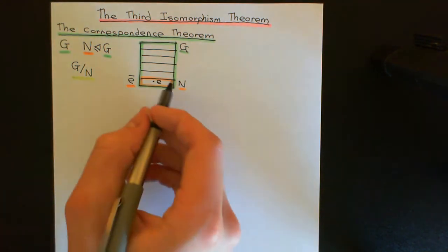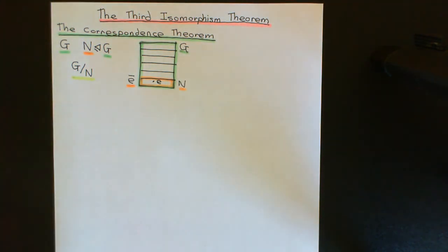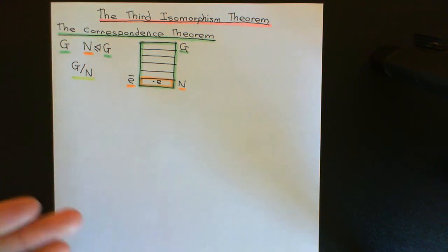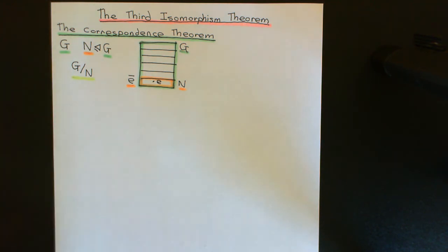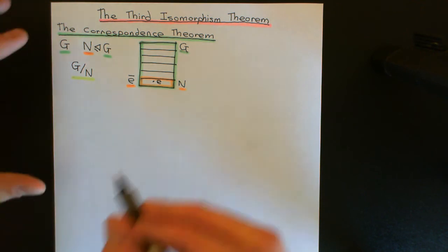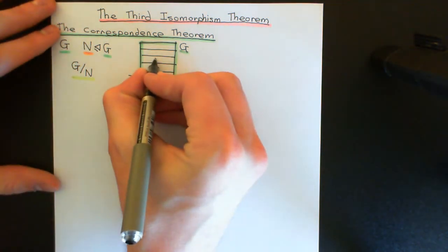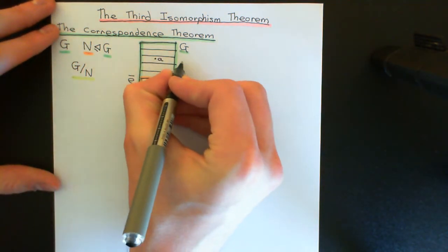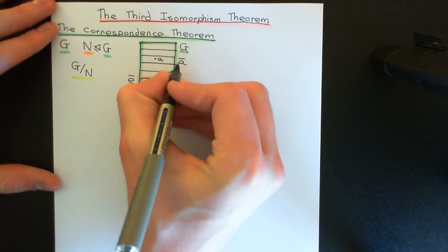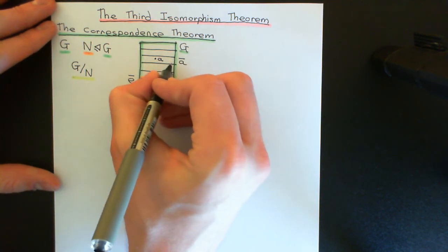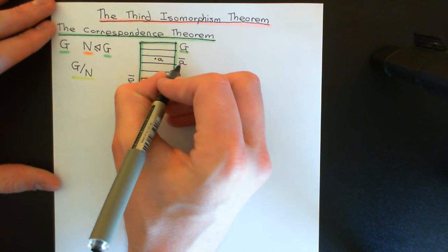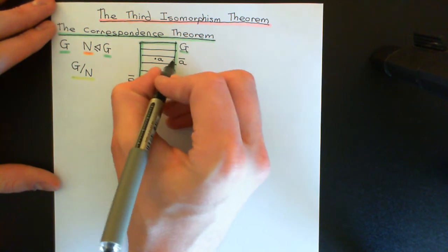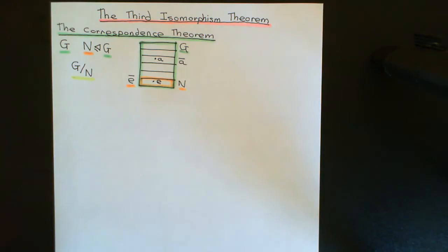We put these cosets into a set: it will contain identity-bar, A-bar, and so on — the elements become all of the cosets. To turn this into a group, we need to define a composition law on these cosets. Each coset only gets one name; you don't give it multiple names.